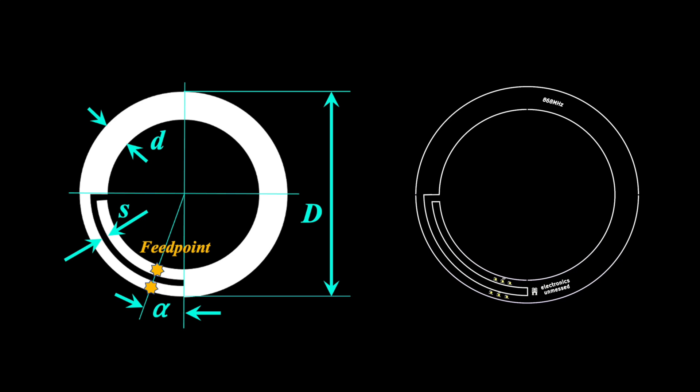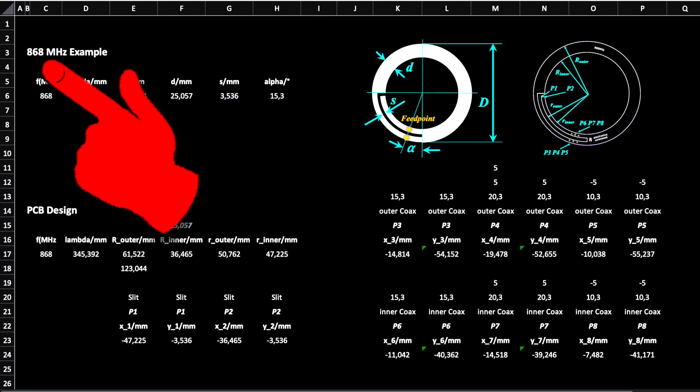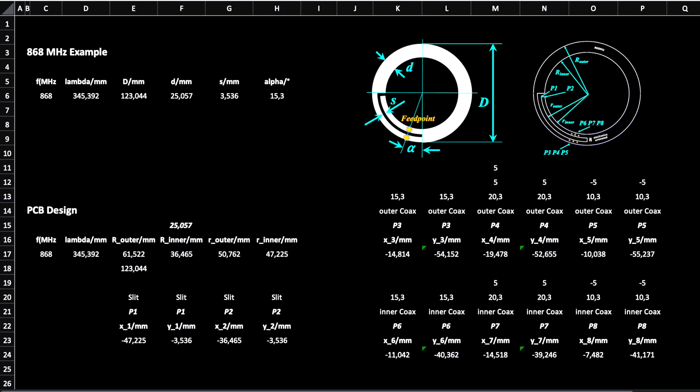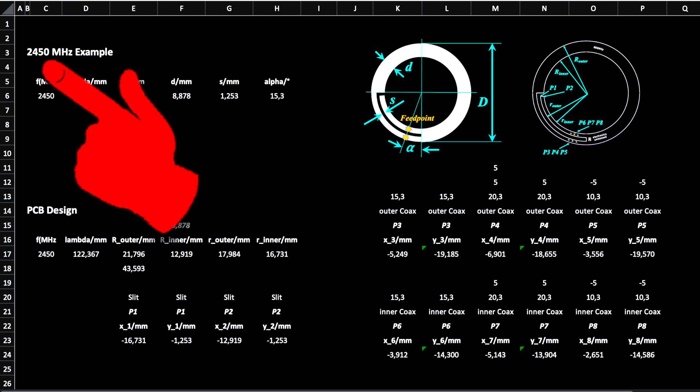Working with KiCad, the radii of the structures and the XY coordinates of some points are useful. A simple spreadsheet helps me to calculate these. Here are the coordinates for the 868 MHz design, and for the 2450 MHz design.